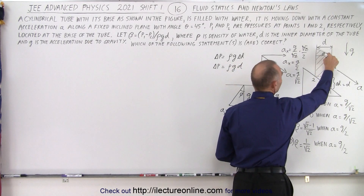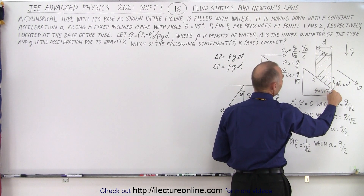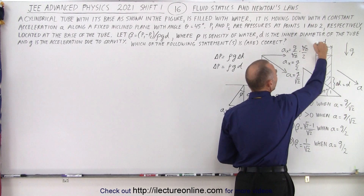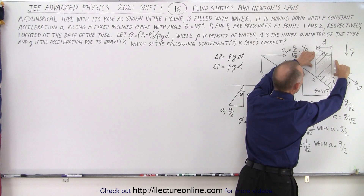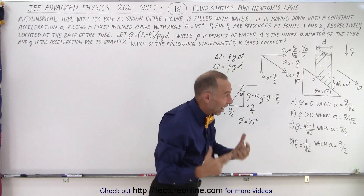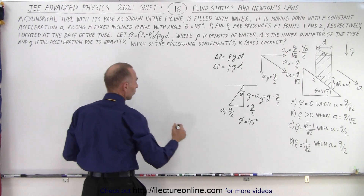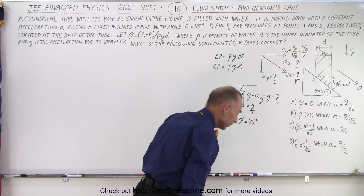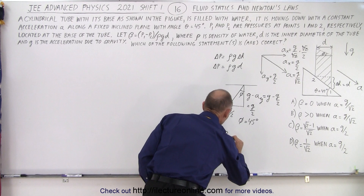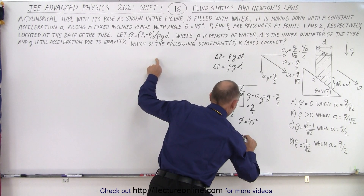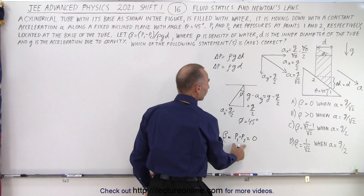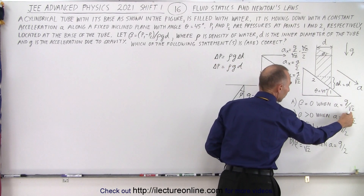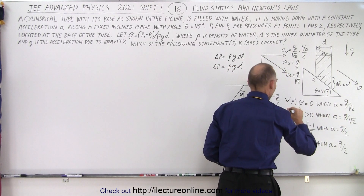If angle phi is 45 degrees and the incline angle is also 45 degrees, the water surface is parallel to the inclined plane, meaning the height difference between the two points is zero. If the height difference is zero, the pressure difference is zero, so beta equals p1 minus p2 equals 0. Therefore, when a equals g over the square root of 2, beta equals 0 — answer A is correct, and B is not.